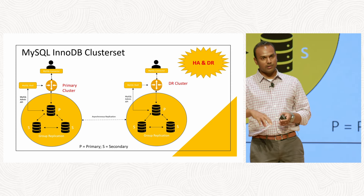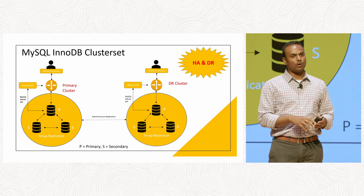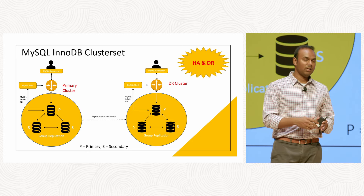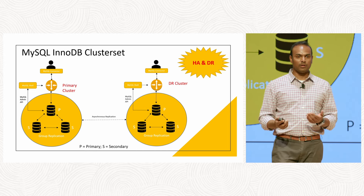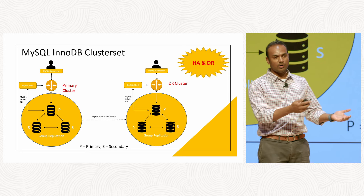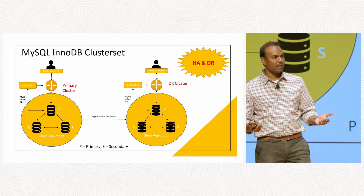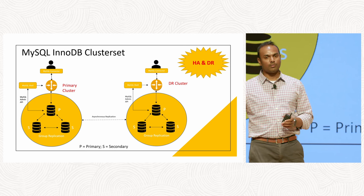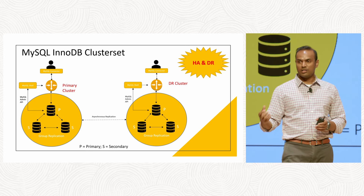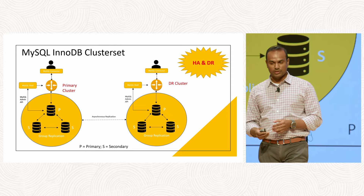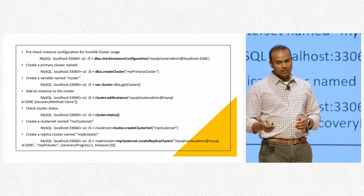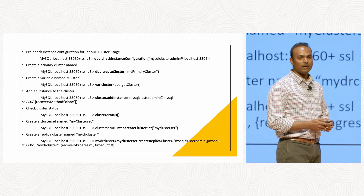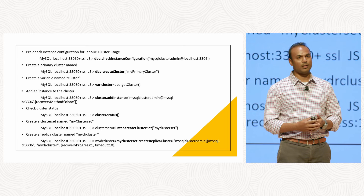What InnoDB ClusterSet adds to this configuration is creating another InnoDB Cluster in a completely different region, which acts as your DR region. When you consider common disasters — natural disasters, power failures, or dependencies on other components — you need something in your DR region. If you want that DR region to also be highly available, that is where InnoDB ClusterSet comes in. It is easy to set up, follows a similar mechanism as InnoDB Cluster, with just a few extra commands.